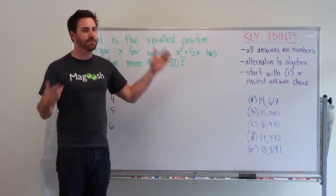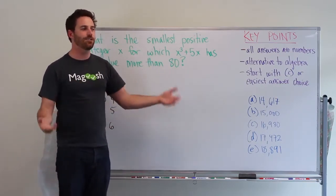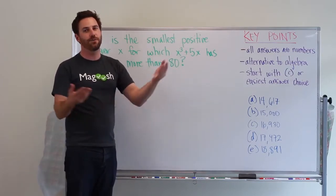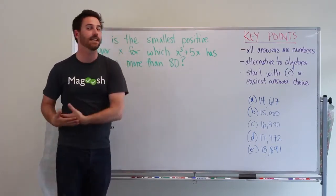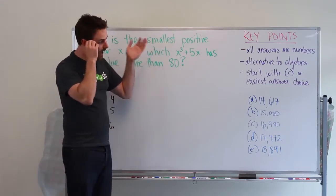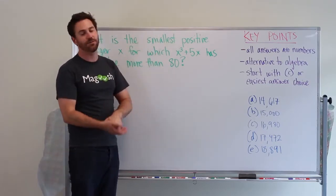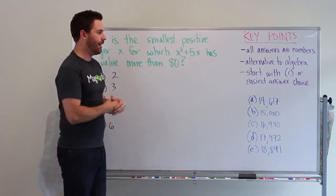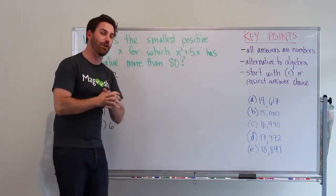If you start with C and it doesn't work, if it's too big then you can eliminate C, D, and E and start with B or A. If it's too small then you can eliminate C, B, and A. So it's the most efficient way to approach things.